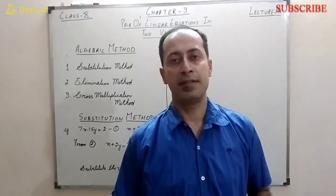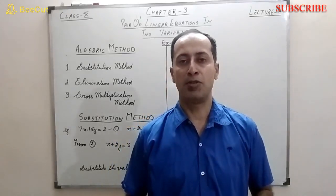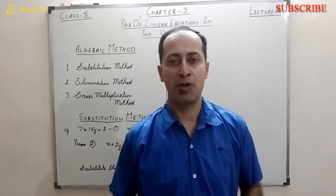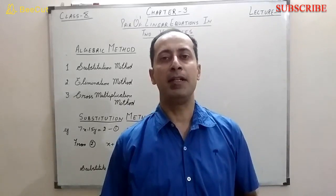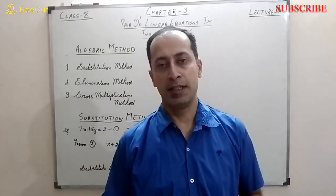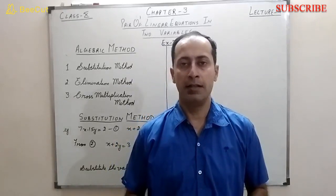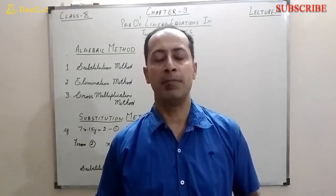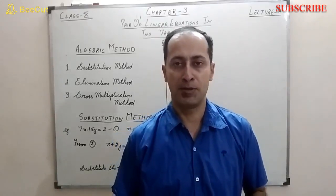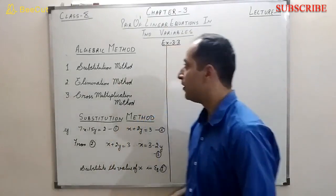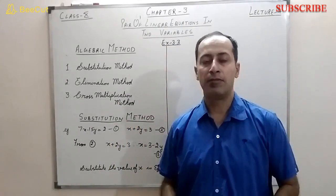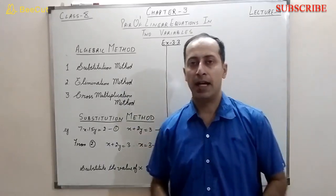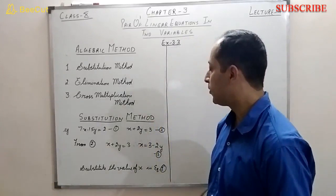We also covered how to find the consistency of equations — solutions can be consistent or inconsistent. For consistent solutions, lines on the graph can be intersecting or coincident; for inconsistent, the lines are parallel. Now we move to the second type: the algebraic method of solving the pair of linear equations in two variables, which has three kinds — substitution, elimination, and cross multiplication.